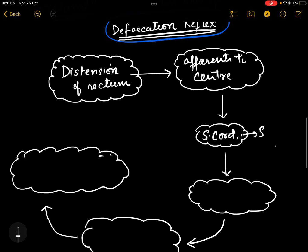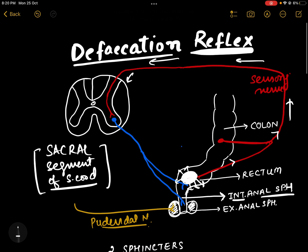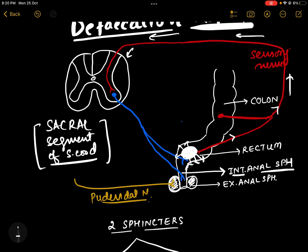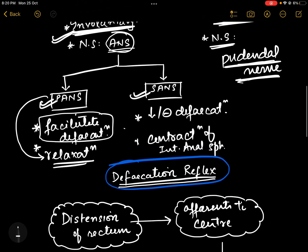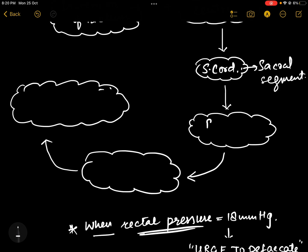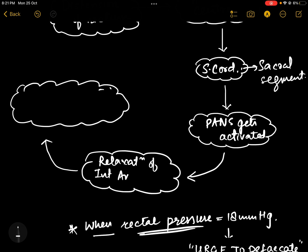From the sacral segment of the spinal cord, parasympathetic fibers arise. These fibers supply the internal anal sphincter and cause relaxation of the internal anal sphincter. As noted, parasympathetic fibers facilitate defecation by causing this relaxation.